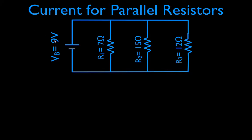This circuit has a nine-volt battery and three resistors R1, R2, and R3 — they're all in parallel. You can see each one is parallel to the others. They're called parallel because they look parallel; they're not in series. R1 is seven ohms, R2 is fifteen ohms, and R3 is twelve ohms. The current that comes out of the battery we call IB — I is the symbol for current, B is for battery.